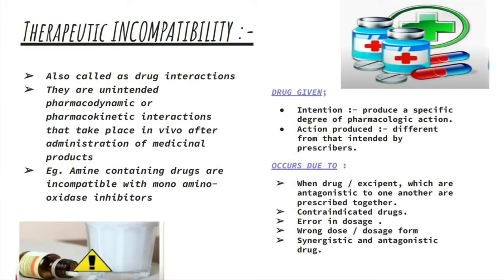Moving on to therapeutic incompatibilities: this is generally an error that occurs while prescribing, also known as drug interactions. They are unintended pharmacodynamic or pharmacokinetic interactions that take place in vivo — inside the body — after administration of medicinal products. For example, amine-containing drugs are incompatible with monoamine oxidase inhibitors. The intention is to produce a specific degree of pharmacological action, but therapeutic incompatibility results in an action different from what was intended by the prescriber.